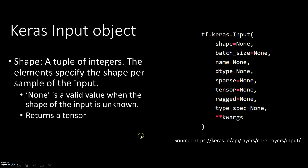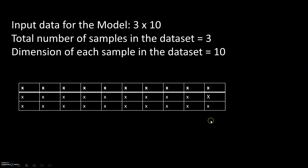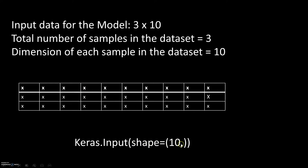Let's go back to our slides. The shape parameter is really the shape of each sample in our data set. For example, let's say our data set has only three samples, and each sample consists of 10 elements. The total shape of our input data is 3 by 10, but the shape of each sample is 1 by 10. So when we feed this type of data into a Keras model, what we need to specify as the shape is the shape of each element of the data set, which in this case is 10. We would specify Keras.Input shape equals (10,), and we do need to include the comma at the end if our input is one-dimensional.